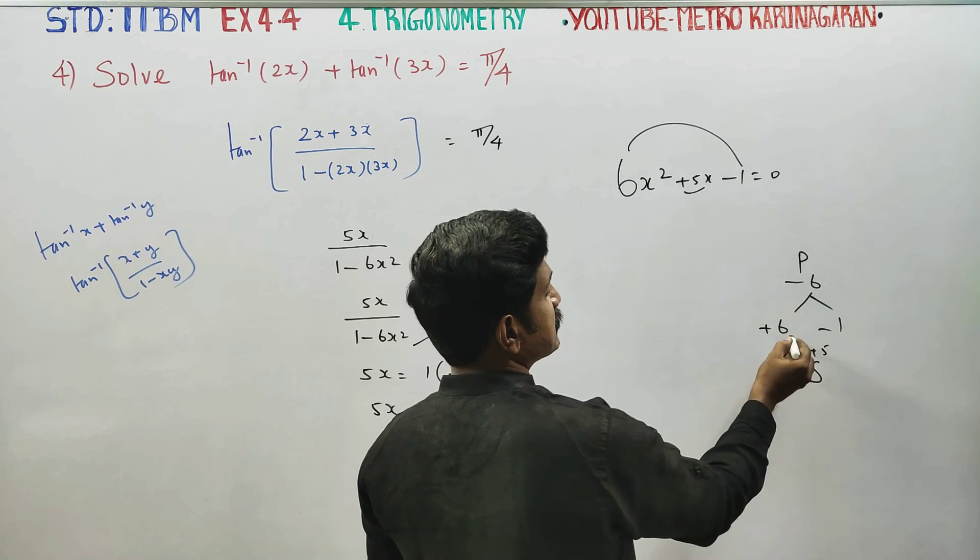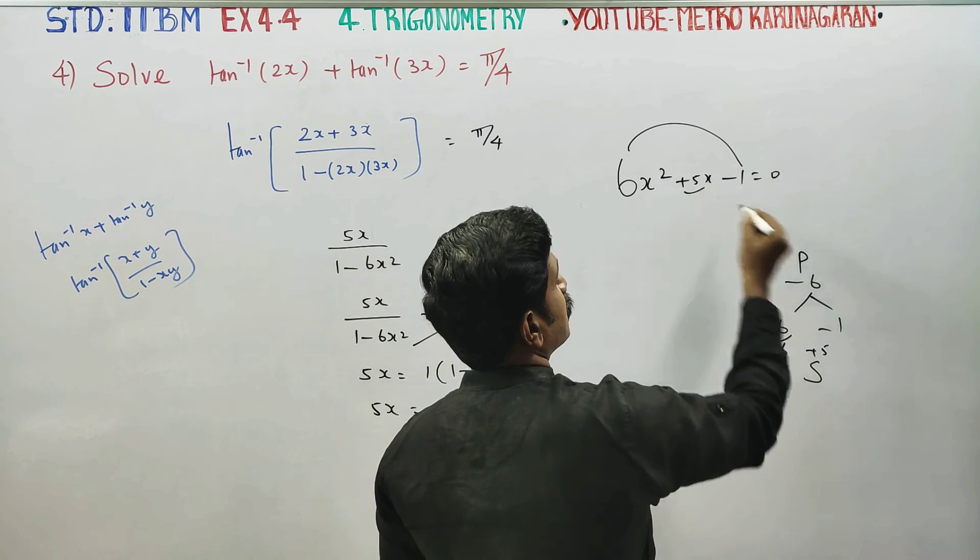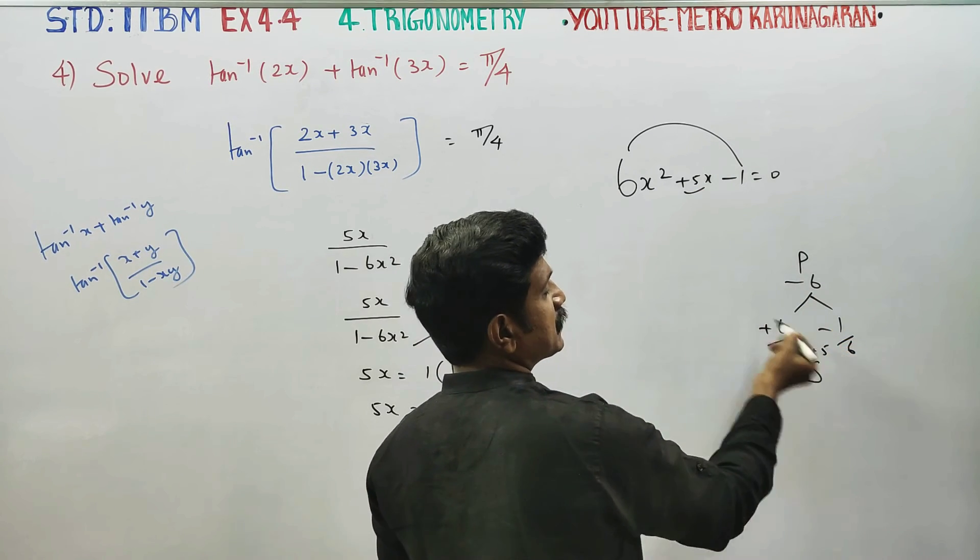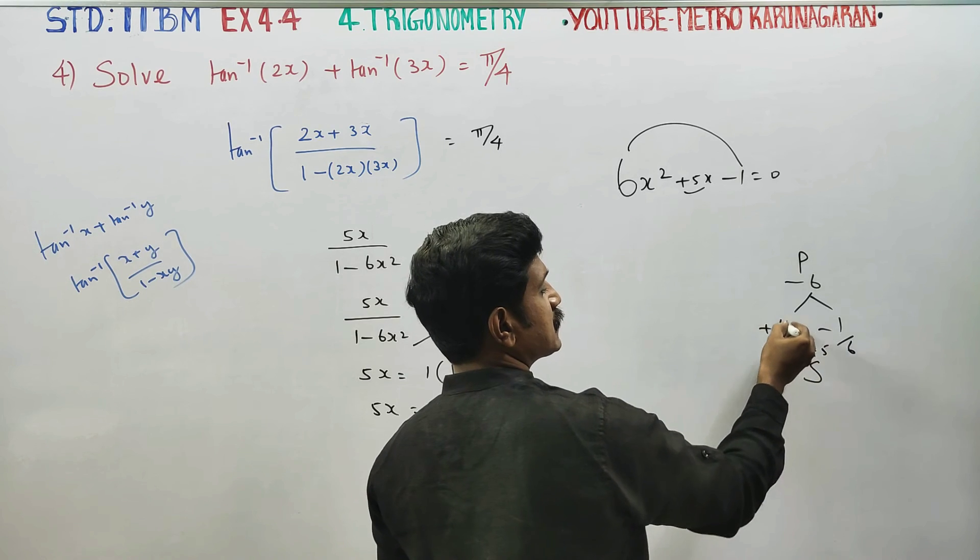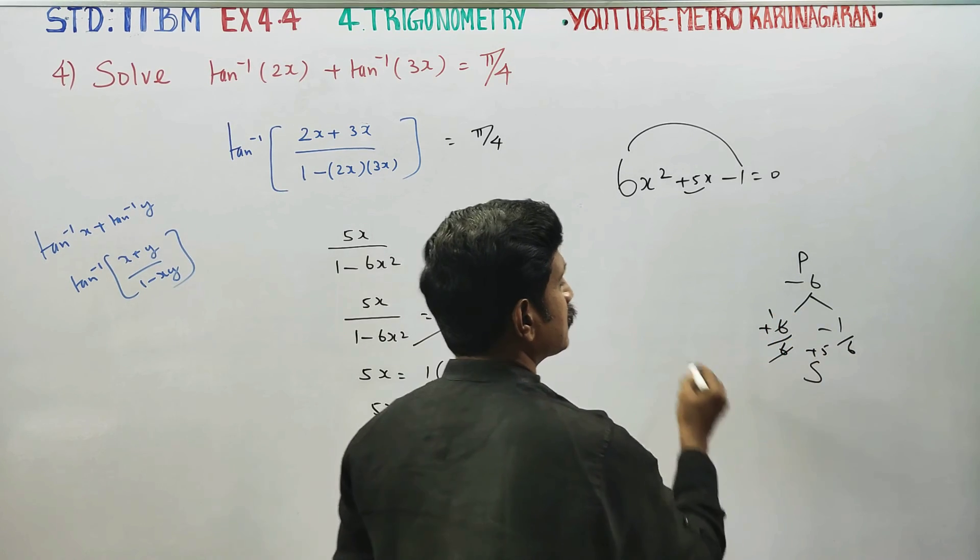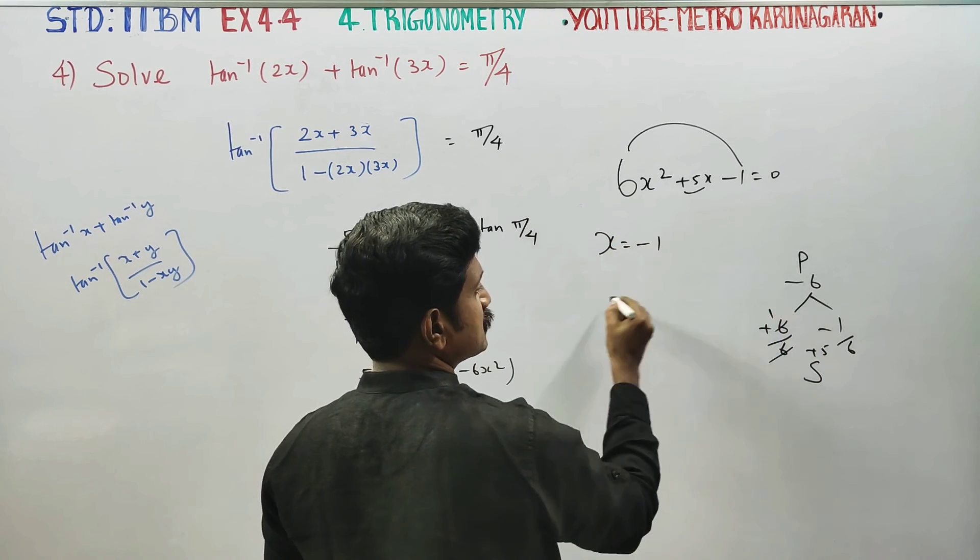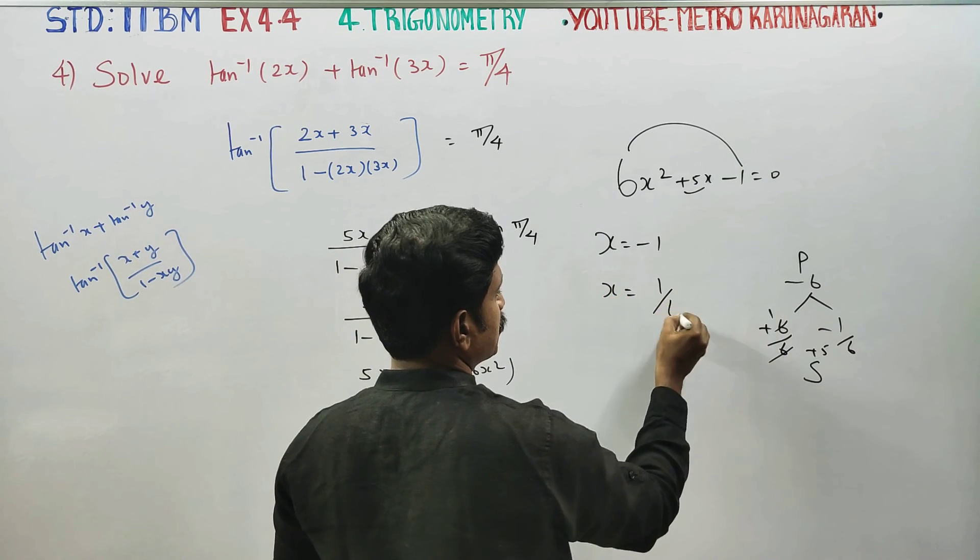Using the quadratic formula or factoring, we get x equals minus 1 by 6 and x equals plus 1 by 6.